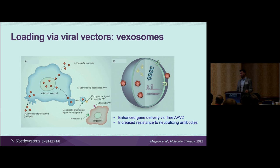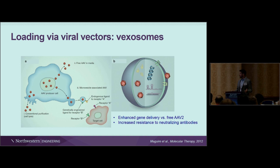Another approach is vexosomes — exosomes loaded with AAV, a technology from Casey McGuire's group. You simply harvest secreted vesicles instead of lysing cells to retrieve viral particles. This was shown to be effective and potentially shields viral particles from the immune system. Manufacturing is a challenge being investigated, but this represents a way of indirectly loading nucleic acids into EVs with potential effect enhancement.